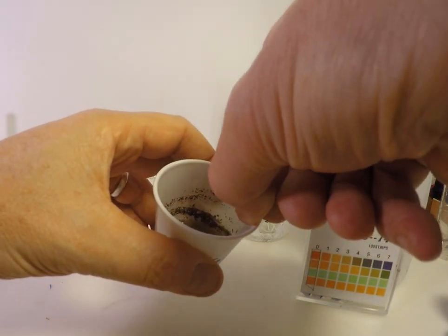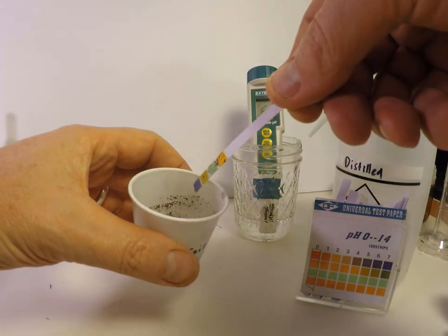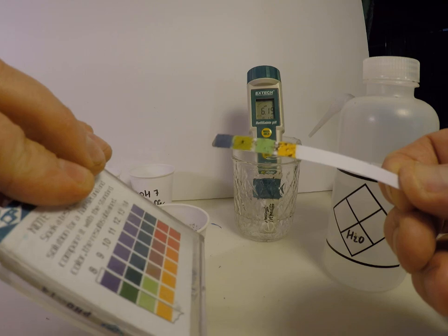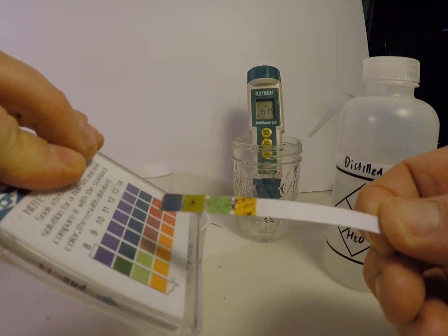Here is the same soil suspension read with a strip of pH indicator paper. If we compare the colors to the key on the pH paper box,